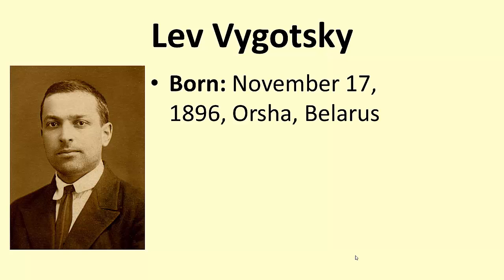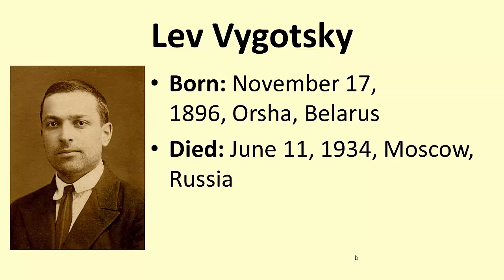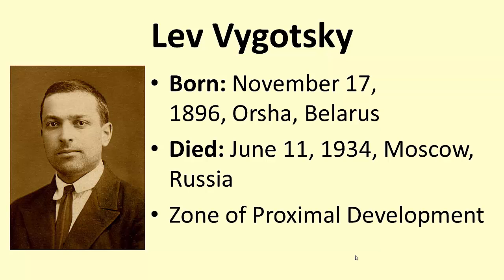He was born 118 years ago in Belarus, in a little town called Orsha. Unfortunately for us, he died quite young of tuberculosis. But in the time he was alive, he came up with something called the Zone of Proximal Development. And that's the reason that we humans find programming quite difficult.